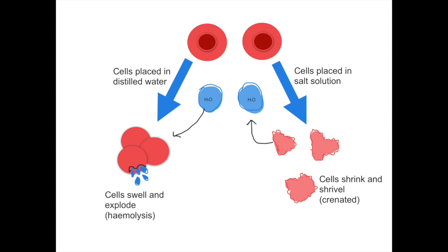Now, if we put our red blood cell in a pure water situation, you find that water comes flooding in. Why? Because there's much higher water potential, much higher water concentration outside of the cell. But the problem is that the water floods in, and because there's no cell wall, there's nothing to stop the ever-expanding red blood cell from bursting. So effectively, it pops — a horrendous situation for our cell because it's been destroyed. We call this process whereby it bursts: hemolysis, and it's a very dangerous situation for your body to be in.